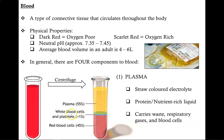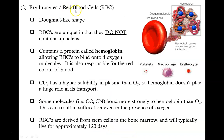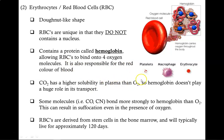The next layer contains the white blood cells and platelets. And then finally, we have red blood cells at the bottom. Red blood cells, also known as erythrocytes, have a donut-like shape. They are unique among cells in that they do not contain a nucleus. However, they do contain a protein called hemoglobin. Hemoglobin allows red blood cells to bind onto four oxygen molecules that are held in place by four iron atoms.